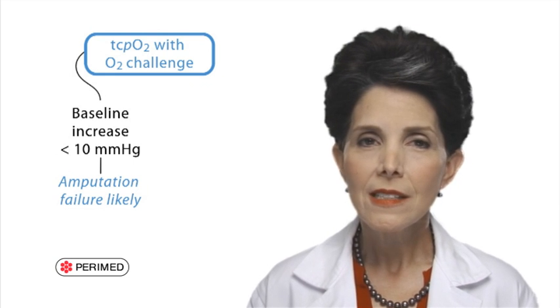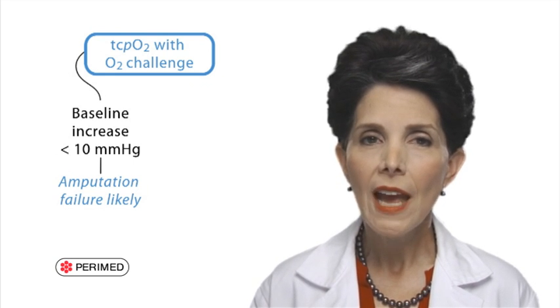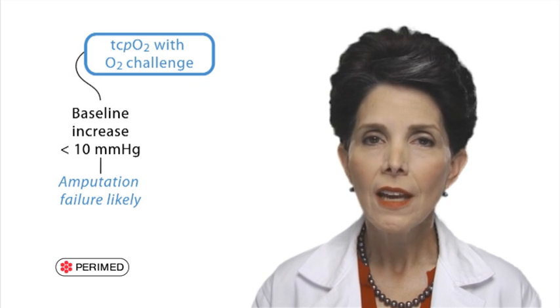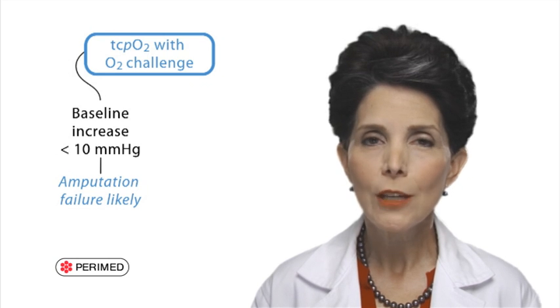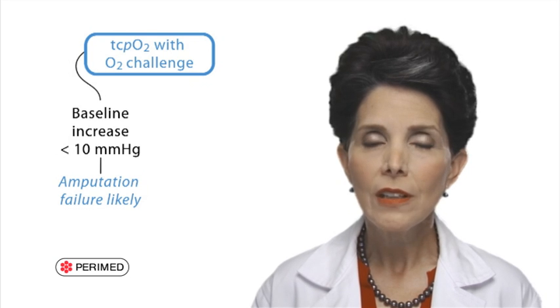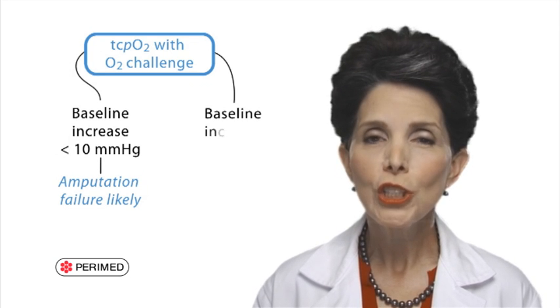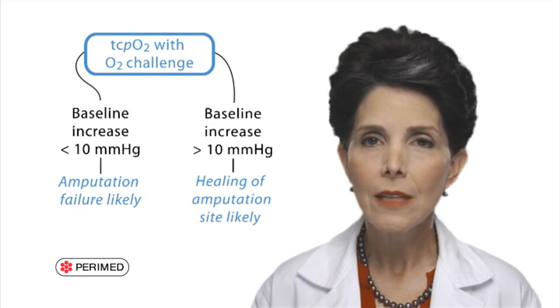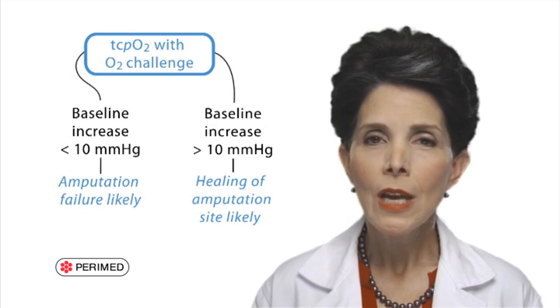In fact, this test is at least 68% accurate in predicting failure of healing after an amputation in patients for whom revascularization is not possible. So, if possible, recommend amputation at a level where the oxygen challenge increase is greater than 10 millimeters of mercury. But remember that an increase of 10 millimeters of mercury represents a really poor oxygen response and confirms that the patient has severe vascular disease.